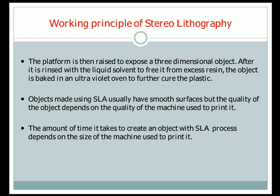The 3D model is subjected to baking — kept inside the oven for a pre-determined temperature — in order to make it harder. Objects made using SLA usually have smooth surfaces, but the quality of the object depends on the quality of the machine used to print it.